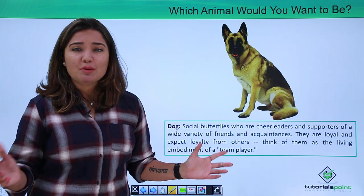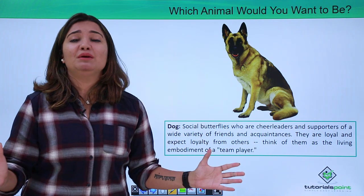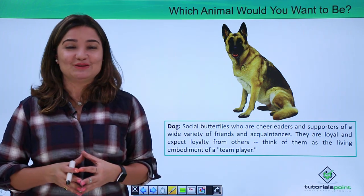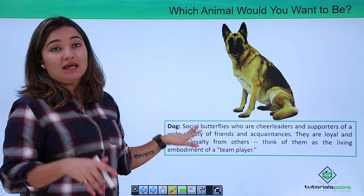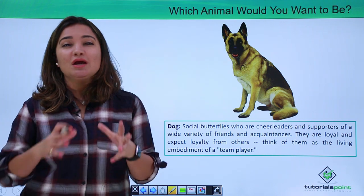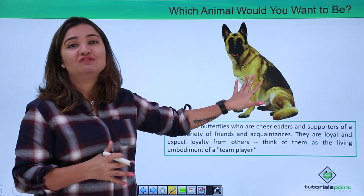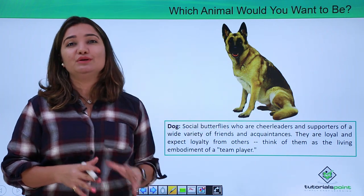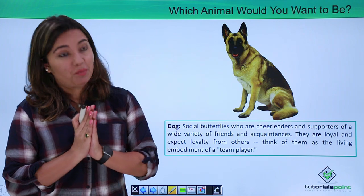How about a dog? I'm sure many people watching this video would be dog lovers. What does this personality type indicate? Dogs are social butterflies. This personality type indicates people who definitely enjoy socializing way too much. Social butterflies who are cheerleaders and supporters of a wide variety of friends and acquaintances.